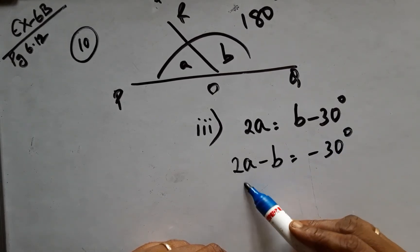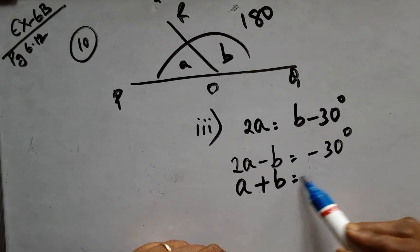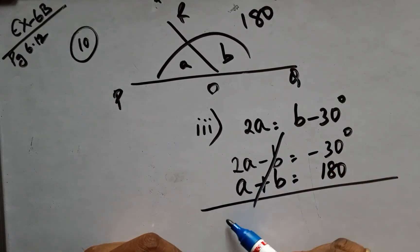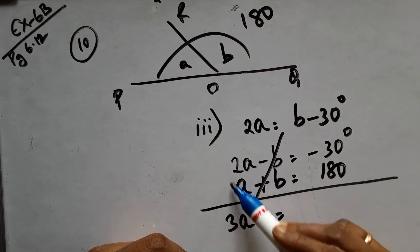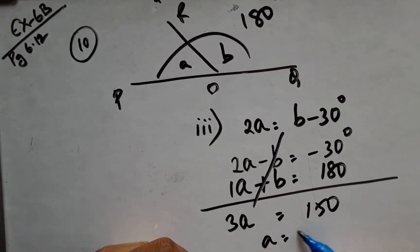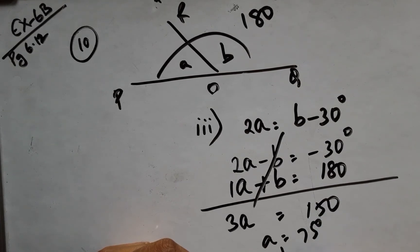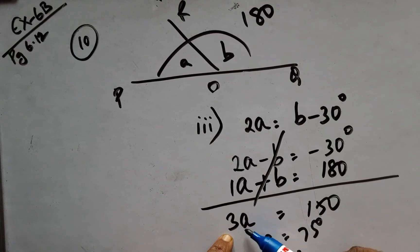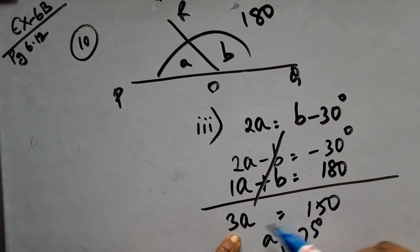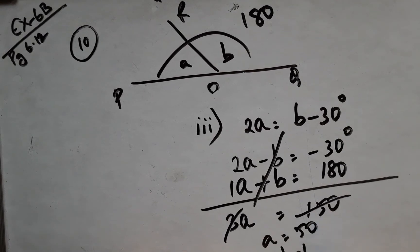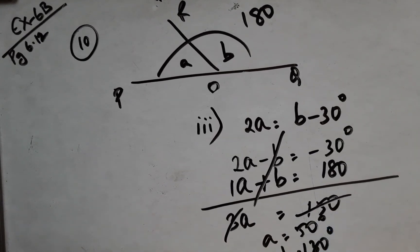And we know that A plus B makes up to be 180. Resolving these two similar equations, this will be 150. Wait, this is not 2A, it is 3A. So 3 times goes into 150, giving 50. So A is 50 and B would be 130 degrees.